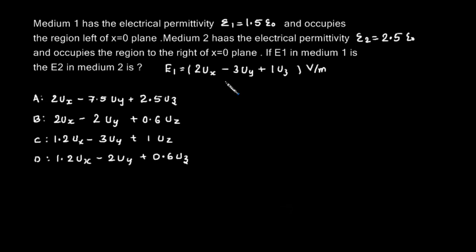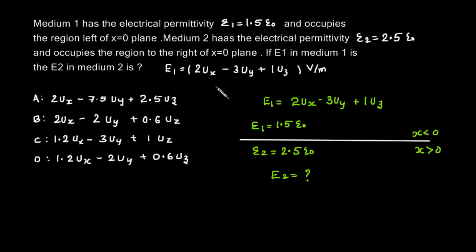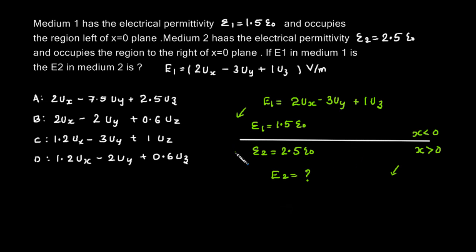This is related to boundary conditions we have learned about electric field. We will quickly draw what is given and then try to solve it. This area is for x less than 0, and this is x greater than 0. We are given the electric field at medium 1 and we are asked what is the electric field at medium 2. This is the x=0 plane.